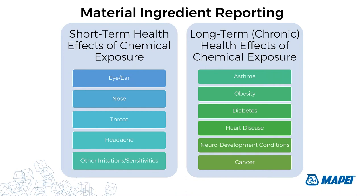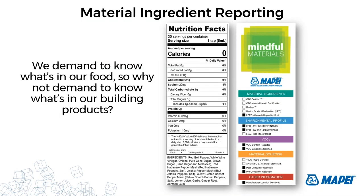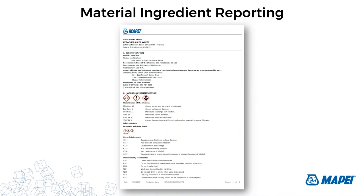Newer versions of green building certifications are starting to implement health-related credits. As a social concern, health and wellness continues to grow. Building occupants have shown increasing interest in the visibility of their products and manufacturing processes. We spend the majority of our time indoors, and the built environment is present in all parts of our lives. We demand to know what's in our food — so why not demand to know what's in our products? Material ingredient reports are standardized ways of reporting the content of building products.